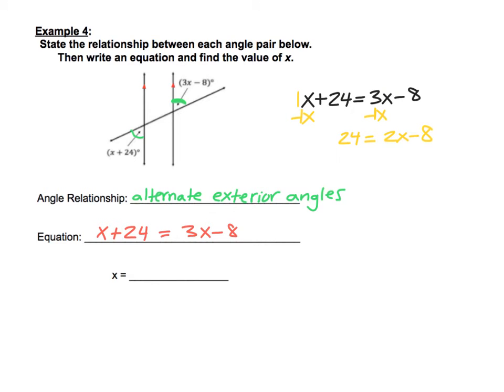Now let's get rid of that minus 8 so we can have the 2x by itself. We can add 8 to both sides, and that gets us down to 32 equals 2x.